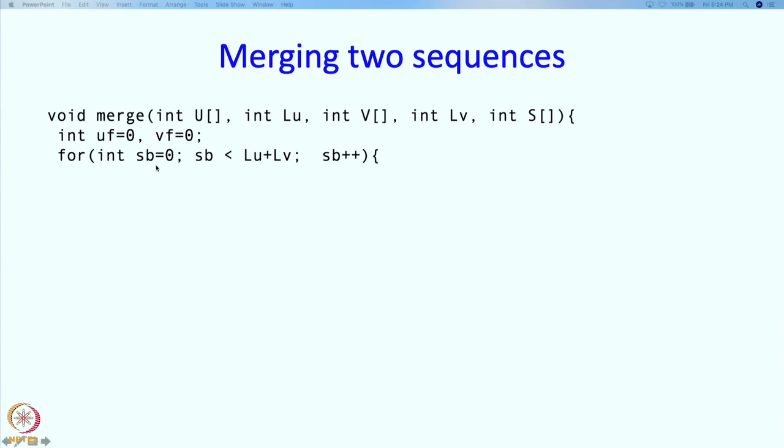We are going to move elements at the back and so the back is going to keep on advancing. It is going to be 0, it will keep on increasing, and when we have moved LU plus LV elements then we are going to stop. So that is how the overall structure is going to be.